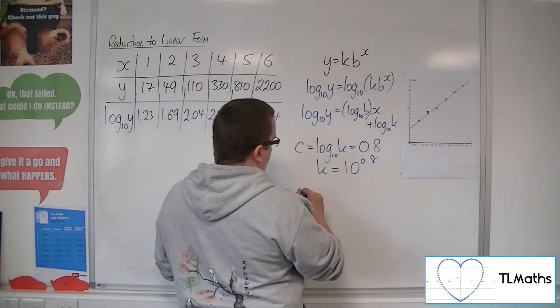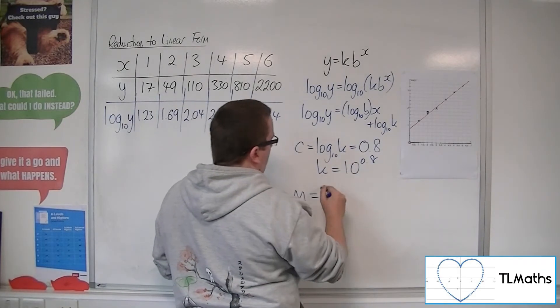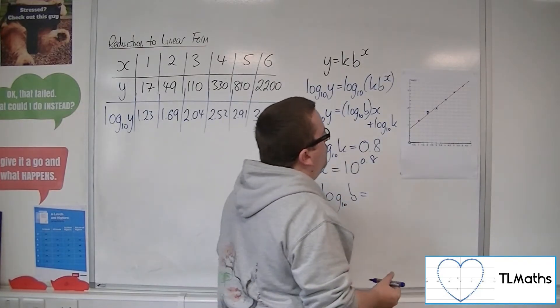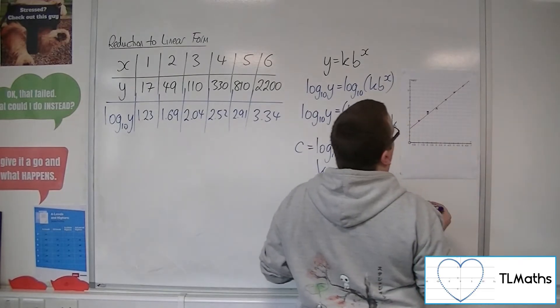And then we can work out the gradient. Now the gradient is the coefficient of the x, the log 10b. So really what we want to think of is drawing this as a big triangle.